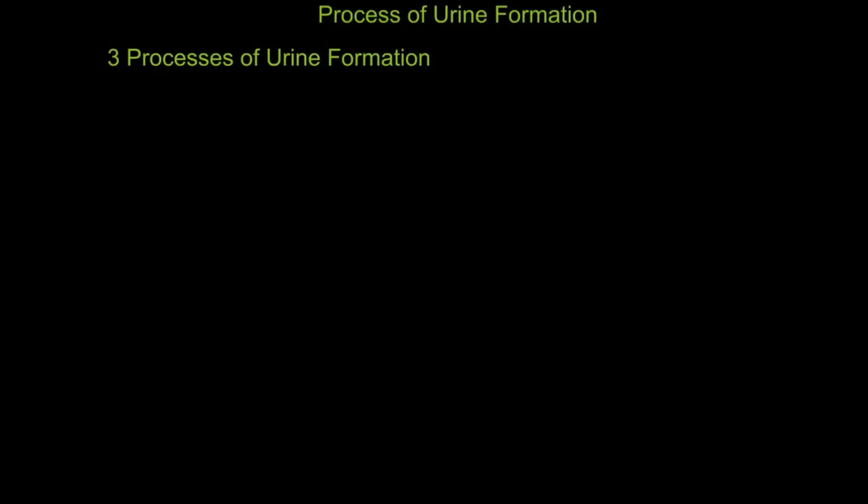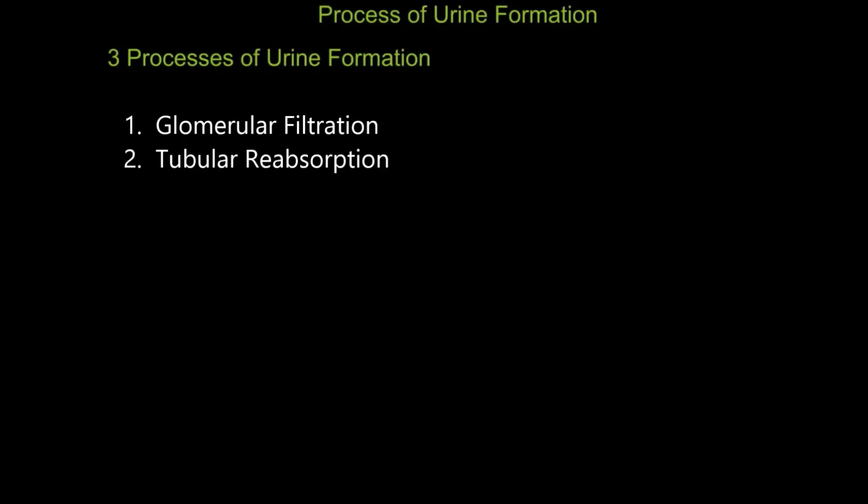There are three processes involved in the formation of urine. The first process is glomerular filtration, which is a separation of smaller substances in the plasma — such as glucose, amino acids, ions, and water — from larger substances in the plasma, such as platelets, white blood cells, red blood cells, and proteins. The second process is tubular reabsorption.